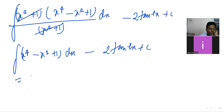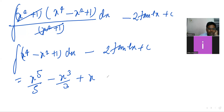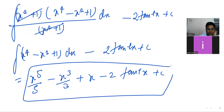Integration of x⁴ can be written as x⁵ divided by 5, minus x³ upon 3, plus x, minus 2 tan inverse of x plus c. So this is the final answer.